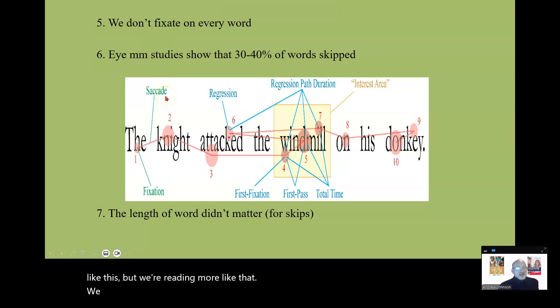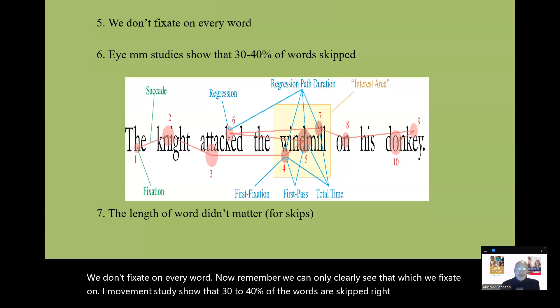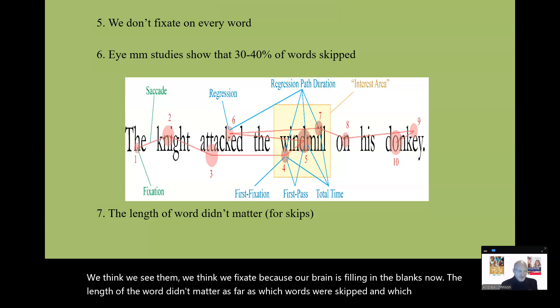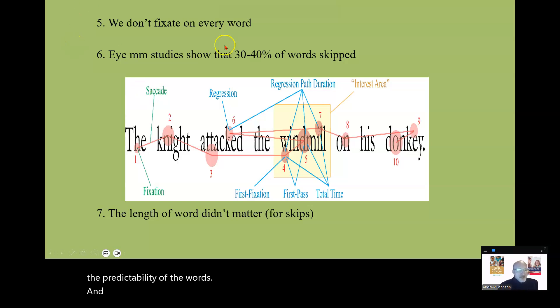We don't fixate on every word. Now, remember, we can only clearly see that which we fixate on. Eye movement studies show that 30 to 40 percent of the words are skipped right over. We think we see them. We think we fixate because our brain is filling in the blanks. Now, the length of the word didn't matter as far as which words were skipped, the predictability of the words. And content words that are important tend to be fixated on more than the little words, the function words.